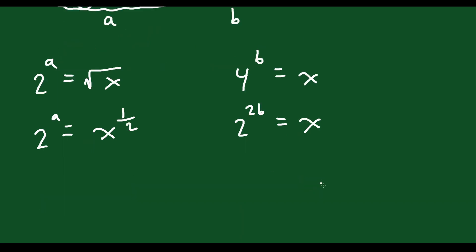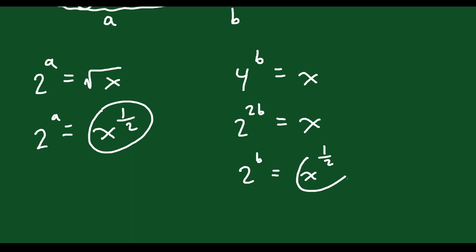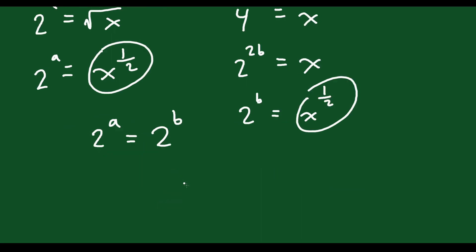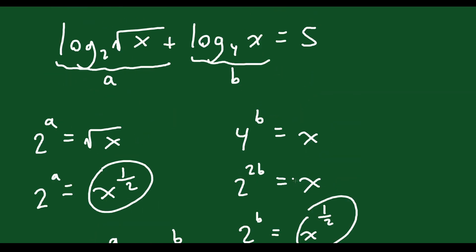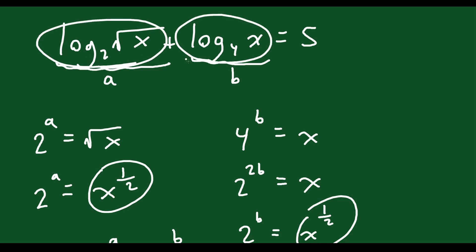You could solve for 2 to the b by square-rooting both sides — you'd get 2 to the b equals x to the 1/2. Well, if 2 to the a equals x to the 1/2 and 2 to the b equals x to the 1/2, then 2^a must equal 2^b, which means a must equal b. That's interesting — if a and b are equal to each other,